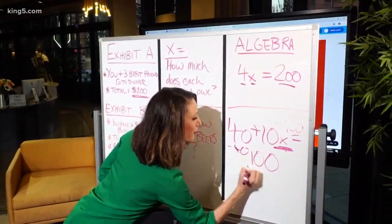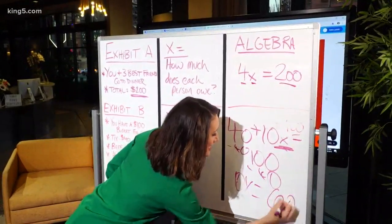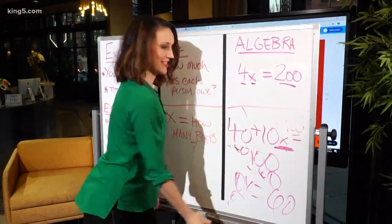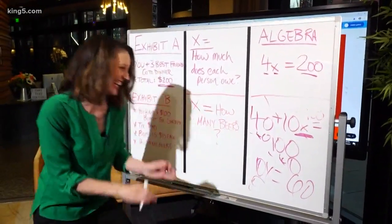Sure. You subtract 40 from either side, and now you have 10x equals 60, and then you can get six beers. You're not helping. Did I do it? Anybody? Thank you so much. This is good.